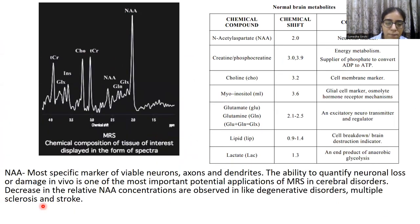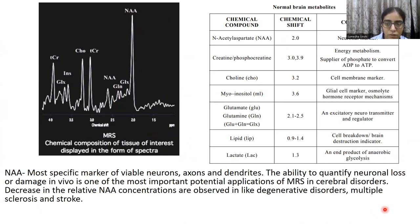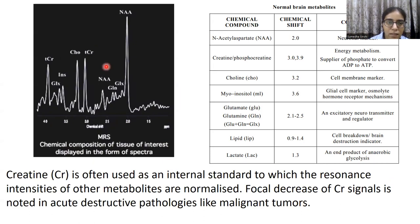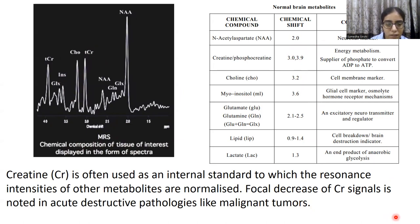Discussing the metabolites briefly: NAA is the most specific marker of viable neurons, seen at a peak of 2 ppm. The ability to quantify neuronal loss or damage in vivo is one of the most important potential applications of MRS. NAA can be reduced in multiple conditions like neurodegenerative disorders, MS, and stroke. Creatinine peaks are seen at 3 and 3.9 ppm, with the main peak at 3 ppm. It is used as an internal standard to which resonance intensities of other metabolites are normalized, and focal decrease of creatinine can be seen in acute destructive pathologies like malignant tumors.